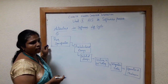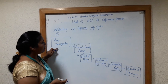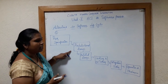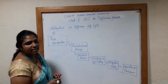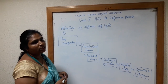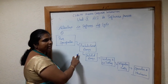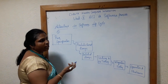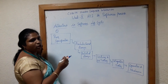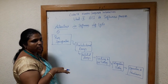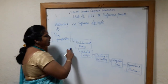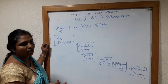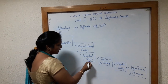When I say stakeholders, anybody involved in the system — we have to collect the requirements from all of them. Then we go for designing the system. When I say design, it includes both architectural design and detailed design, because at the initial stage we may not have a clear idea about how the entire system architecture is going to be.